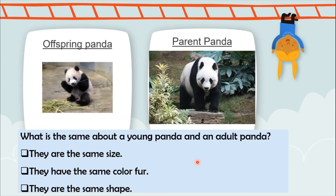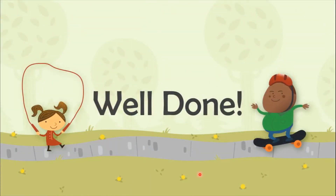Here we have two pictures. What is the same about a young panda and an adult panda? They are not the same size. They do have the same color fur — yes, look at them. They are the same shape — see the head, the ears, the nose, and the body. They have the same shape. Well done, you guys!